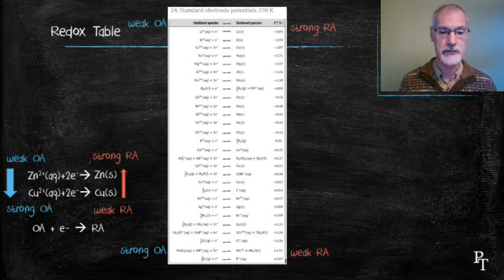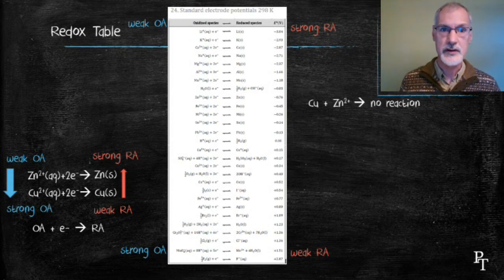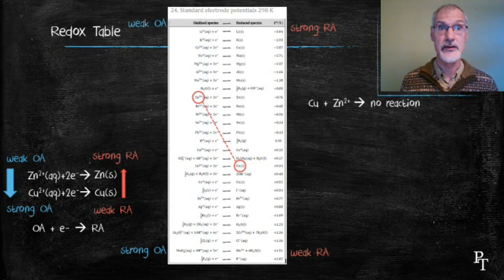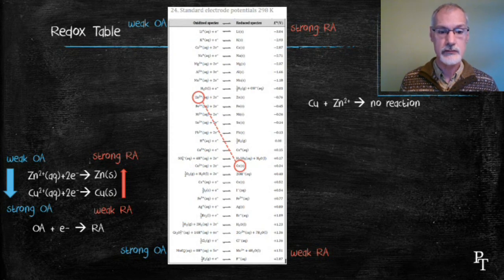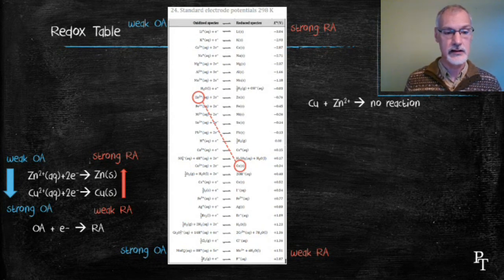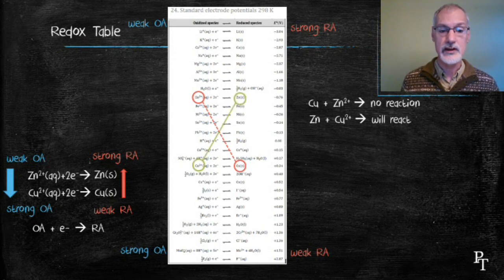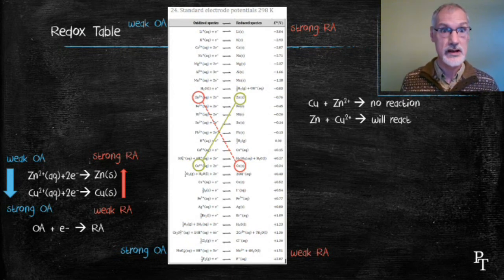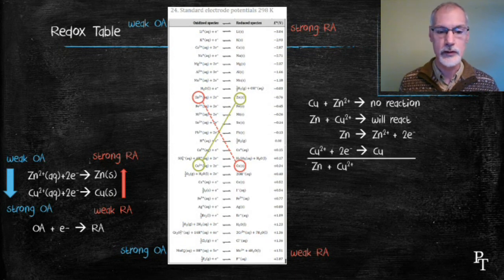Let's use this table to study reactivity. From our first experiment, copper solid and zinc ions don't react — they lie on a red diagonal. Zinc is a stronger reducing agent; it wants to lose electrons more than copper, and it already has in this arrangement. The reverse does react: zinc and copper ions are located on an upward-sloping diagonal to the right — copper has lost the electrons, but zinc would prefer to, so there will be a reaction.